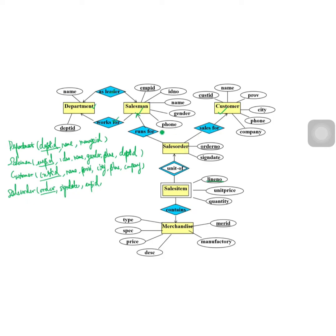We've now handled the salesman relationship. For the 'sold for' relationship, we add the primary key of customer — customer_id — to sales order. So the sales order relation contains: order number, sign date, employee_id of the salesman who sold this order, and customer_id of the customer who bought the products in this order.